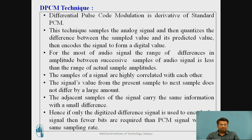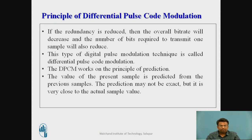Adjacent samples of the signal carry the same information with small differences. Hence, if the difference between values is digitized and encoded, fewer bits are required than for PCM at the same sampling rate. The principle of DPCM is: if redundancy is reduced, the overall bit rate decreases and the number of bits required to transmit each sample is also reduced.